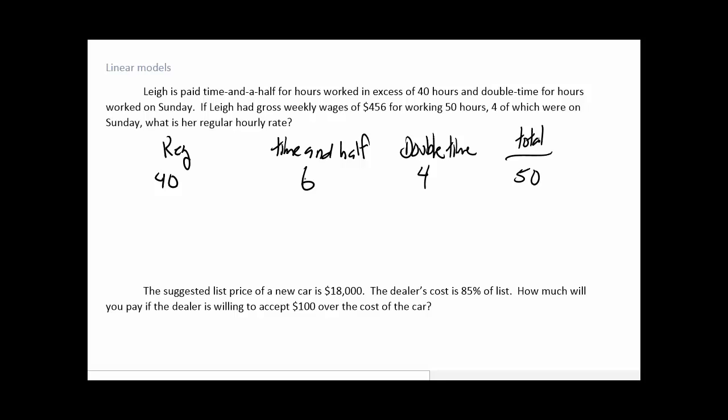Okay, so then we're going to figure out the amount she gets paid. So the amount of money she gets from the regular is going to be the 40 hours times her regular pay. The time and a half means she earns 1.5 of her regular pay, and the double time means she earns twice of her regular pay. And we know that she ended up getting $456 for everything. So if I take each of those quantities and add them up, so 40x plus 6 times 1.5x plus 4 times 2x, that has to add up to the $456.